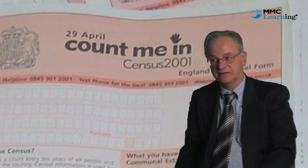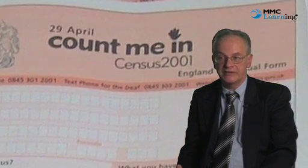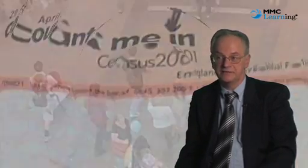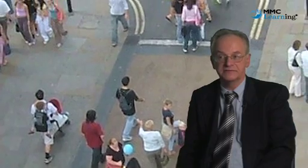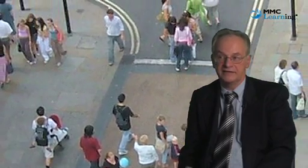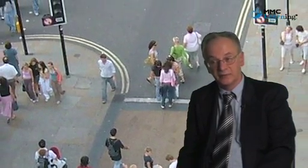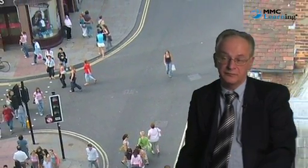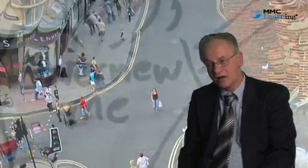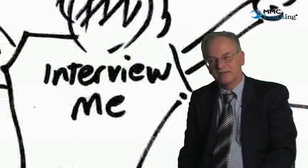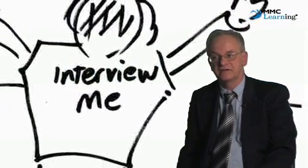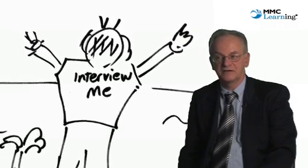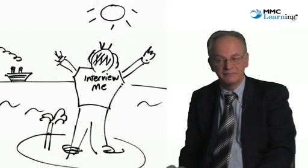With random sampling we can see the levels of cooperation and calculate non-response. This tells us how accurate our results are at the analysis stage. However, it is expensive. Non-random approaches on the other hand are cheaper, but we are less sure of accuracy and the levels of non-cooperation are mixed together with many other things.